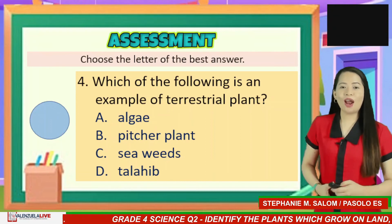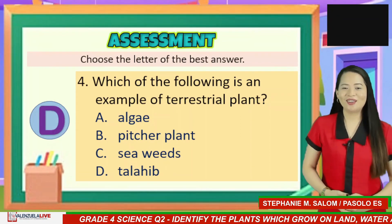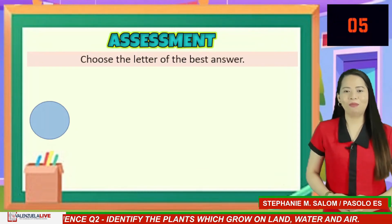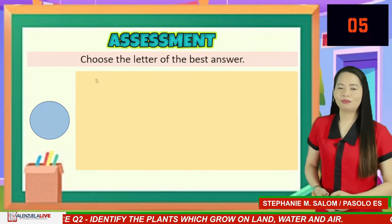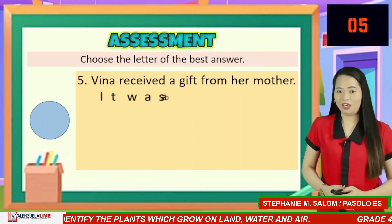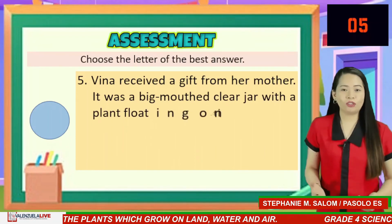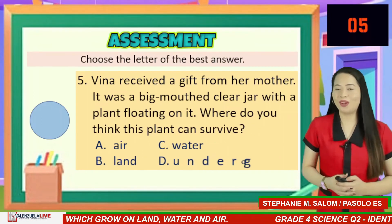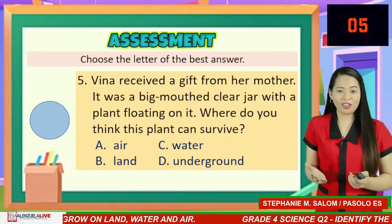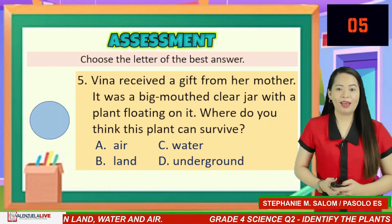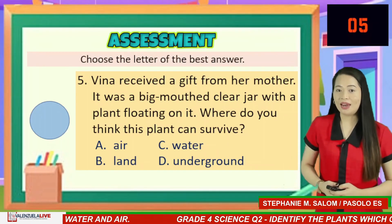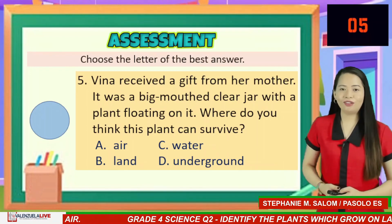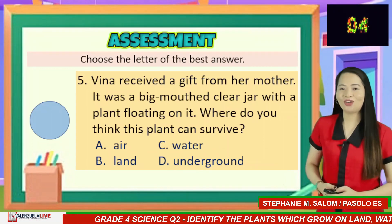If your answer is letter D — very good! Number 5: Vina received a gift from her mother — a big clear jar with a plant floating in it. Where do you think this plant can survive? A. Air, B. Land, C. Water, D. Underground. You have five seconds to answer.